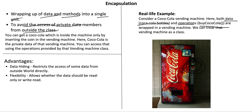To avoid the access of private data members from outside the class: you can get a Coca-Cola which is inside the machine only by inserting a coin in the vending machine. Coca-Cola is the private data, and you can access it using operations provided by the vending machine.